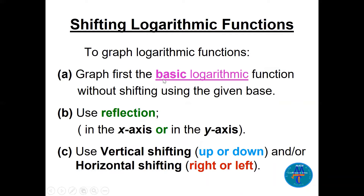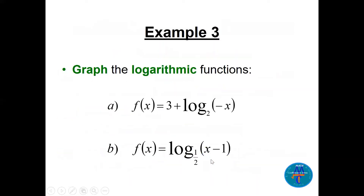Now let's graph logarithmic functions with shifting and reflection. We start with the basic logarithmic function, then look at reflections — either in the x-axis or in the y-axis — and then apply vertical or horizontal shifts. First example: f(x) = 3 + log base 2 of (−x). Note that a minus inside the argument means reflection in the y-axis, while a minus outside means reflection in the x-axis.